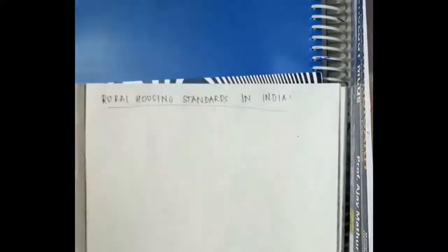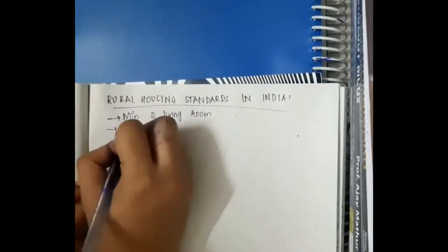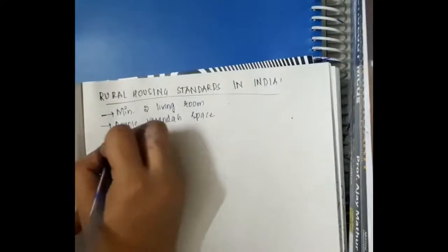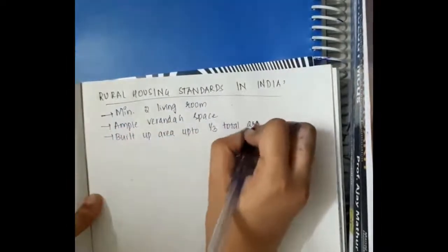In rural housing standards, there should be minimum of 2 living rooms. And ample veranda space should be present. Build-up area should be up to 1 3rd of total area.